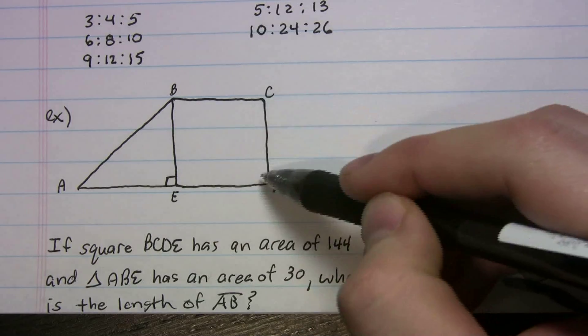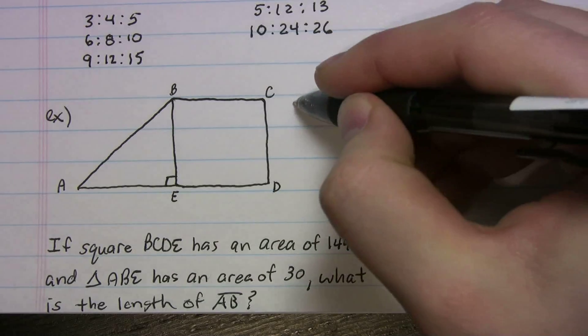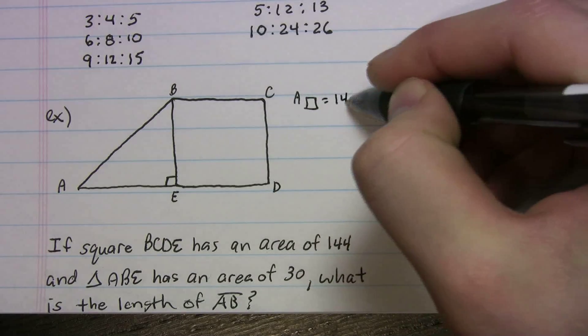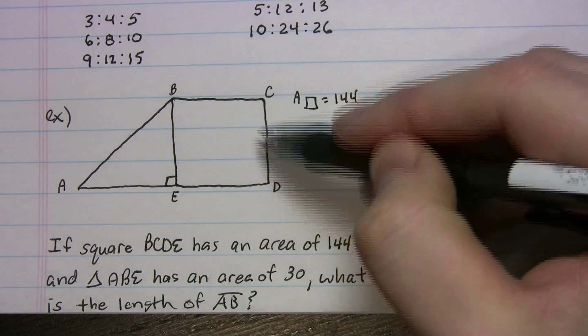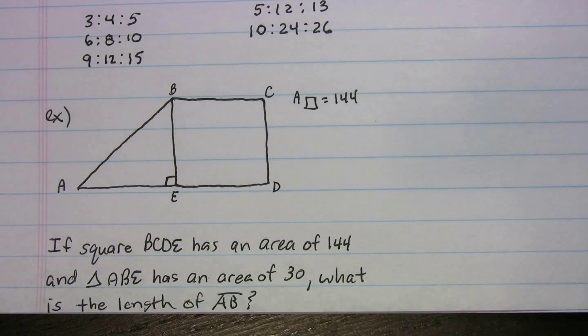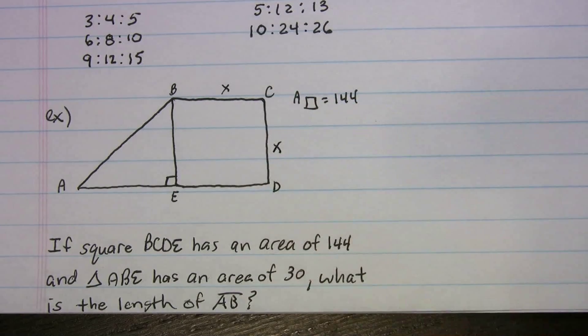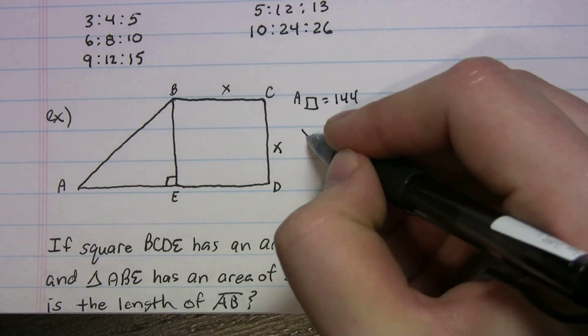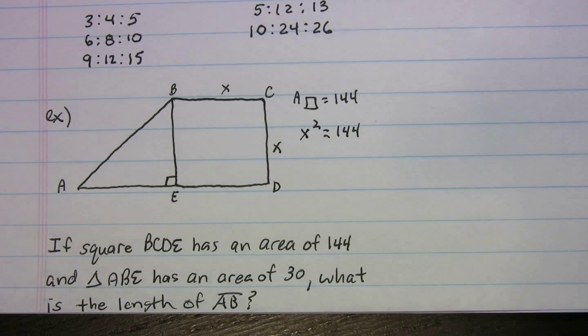Okay. First thing, they tell us it's a square, right? So we have square BCDE. And the square, I'll write it here, the area of the square is 144. Well, that just means that a side times a side gives us 144. Now we can call them both x here. I'm kind of doing a little more than we have to, but we can say x squared equals 144, right?